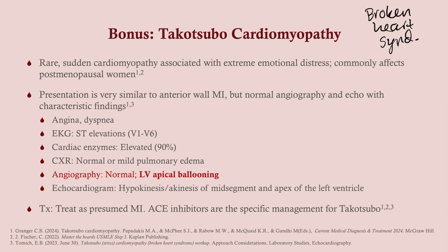The classic finding in Takotsubo is normal vessels on angiogram with left ventricular apical ballooning. Echocardiogram shows hypo- or akinesis of the mid-segment and especially the apex of the left ventricle. You treat it as a presumed MI initially, but once confirmed as Takotsubo you can stop anticoagulants unless there is evidence of clot formation in the akinetic segment. ACE inhibitors are the specific management. About 95% of patients survive, and unlike the other cardiomyopathies, Takotsubo is self-limited and resolves.